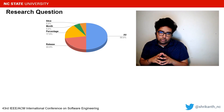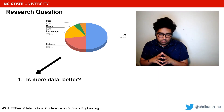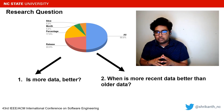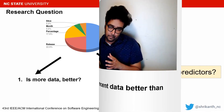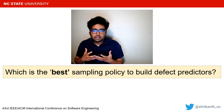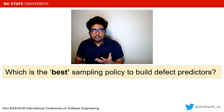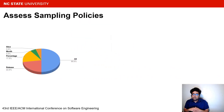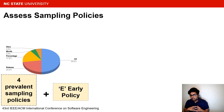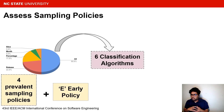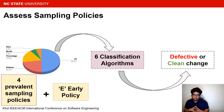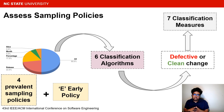We explore two issues for defect prediction: Is more data better? When is more recent data better than older data? In other words, is there one best sampling policy to build defect predictors? To answer these two research questions, this study compares five sampling policies using six classifiers across numerous open source projects, and uses seven performance measures to gauge each sampling policy.